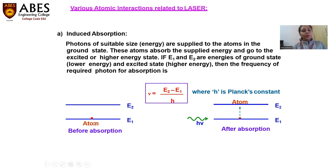Now, if we want to push this atom to the higher excited state, we have to apply energy such that the energy we are applying should be equal to the difference between these two energy levels, E2 minus E1.